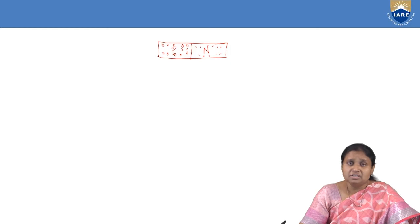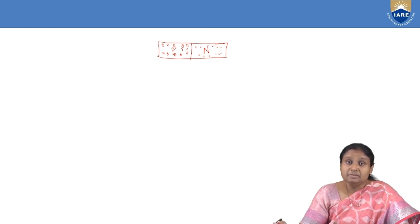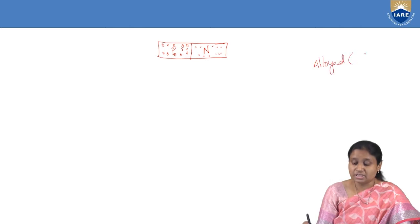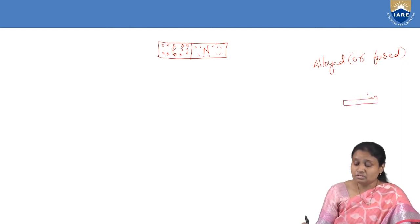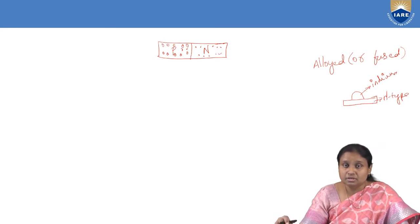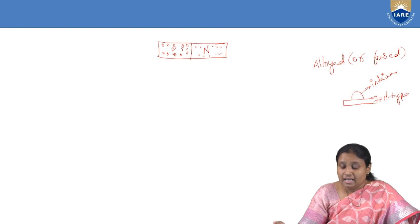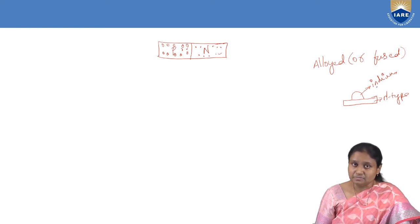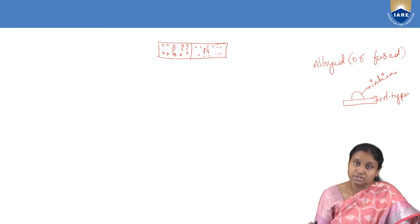The second method of forming a PN junction is the fused or alloyed junction type. In this method, we take a thin wafer of N-type material — a wafer whose thickness is very small. On this N-type wafer, we place a small dot of indium. Indium belongs to Group 3 and is a trivalent impurity. When we heat this arrangement to high temperature, the indium atoms penetrate the surface of the N-type wafer, making the upper surface P-type while the lower surface remains N-type. This is called the alloyed or fused junction type.